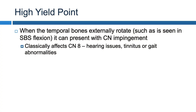A very high-yield point for the cranial OMM section is that when the temporal bones are externally rotated for any reason — SBS flexion being one reason — it can present with a cranial nerve impingement, and it's usually going to be cranial nerve 8. If you see a patient who has hearing issues, tinnitus, ringing in their ears, or gait abnormalities from balance issues, you want to consider that they may have an externally rotated temporal bone causing this cranial nerve 8 palsy. This is a very high-yield point: external rotation of the temporal bone can cause a cranial nerve 8 issue, and you will see external rotation of the temporal bone in SBS flexion.